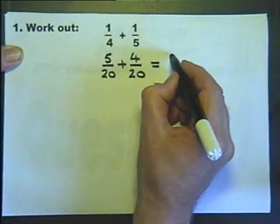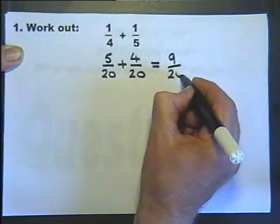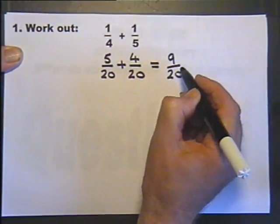5 20ths and 4 20ths is 9 20ths. Always look at the answer carefully just to see if it will cancel.